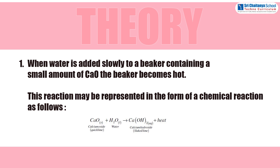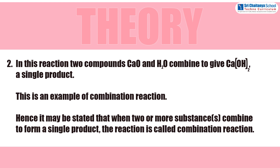CaO (solid) + H₂O (liquid) → Ca(OH)₂ (aqueous) + heat. In this reaction, two compounds CaO and H₂O combine to give Ca(OH)₂, a single product. This is an example of a combination reaction. Hence, it may be stated that when two or more substances combine to form a single product, the reaction is called a combination reaction.